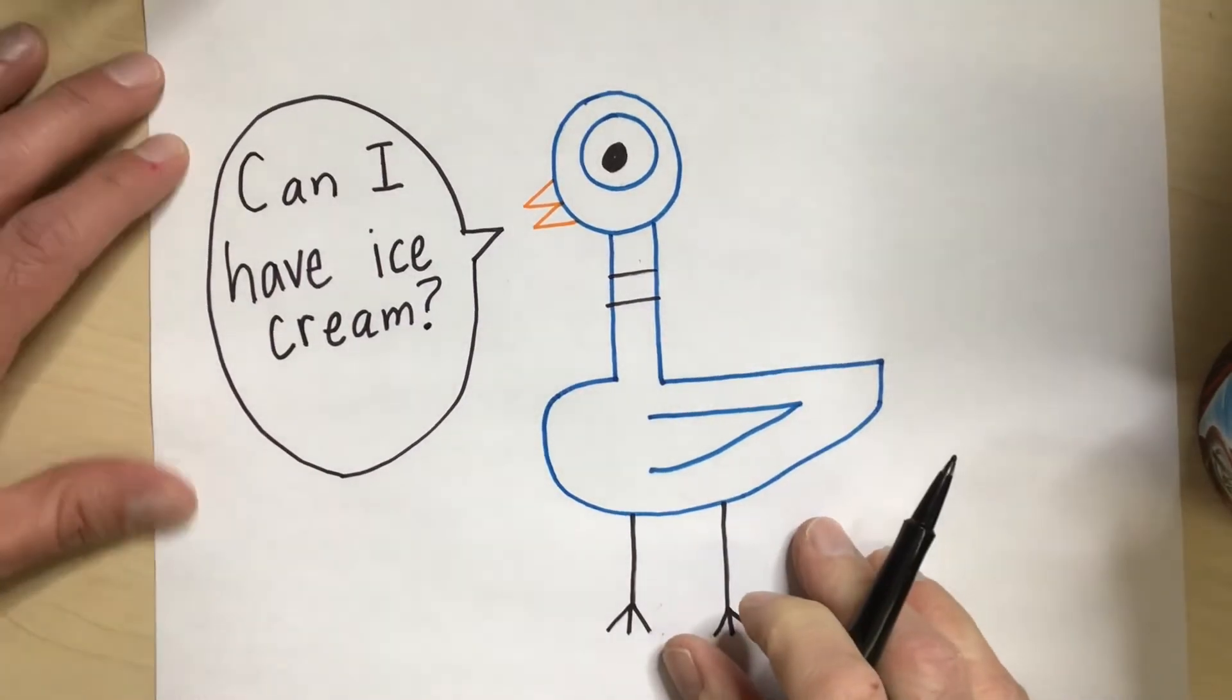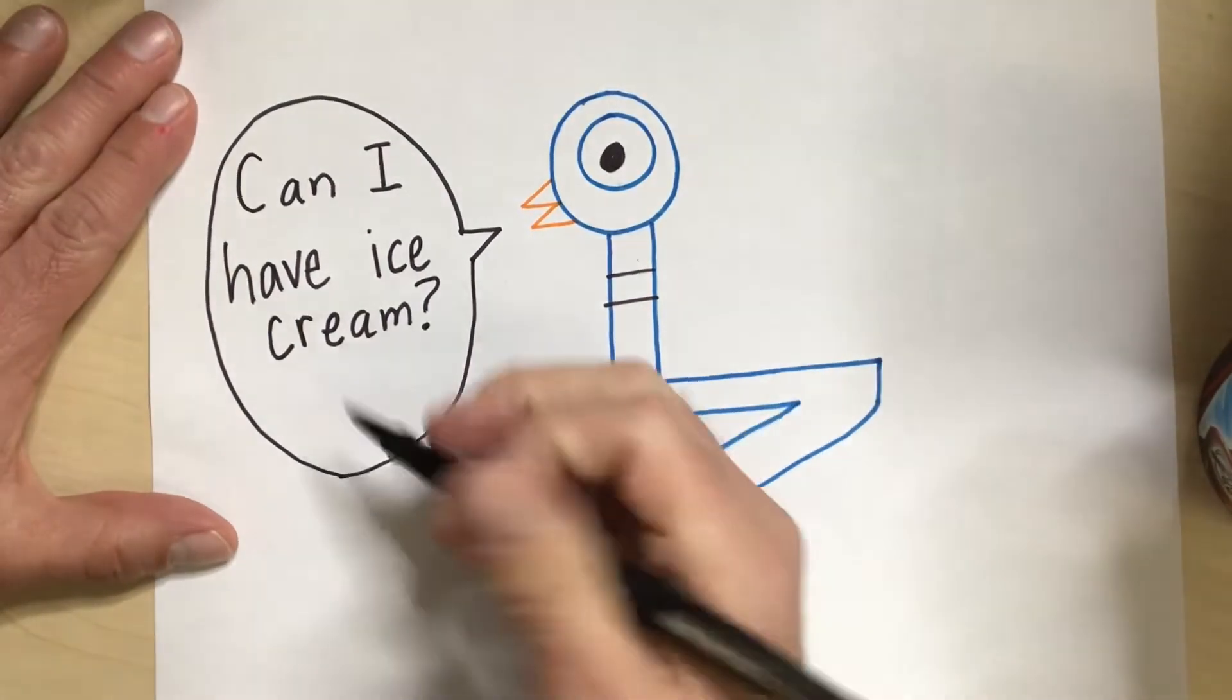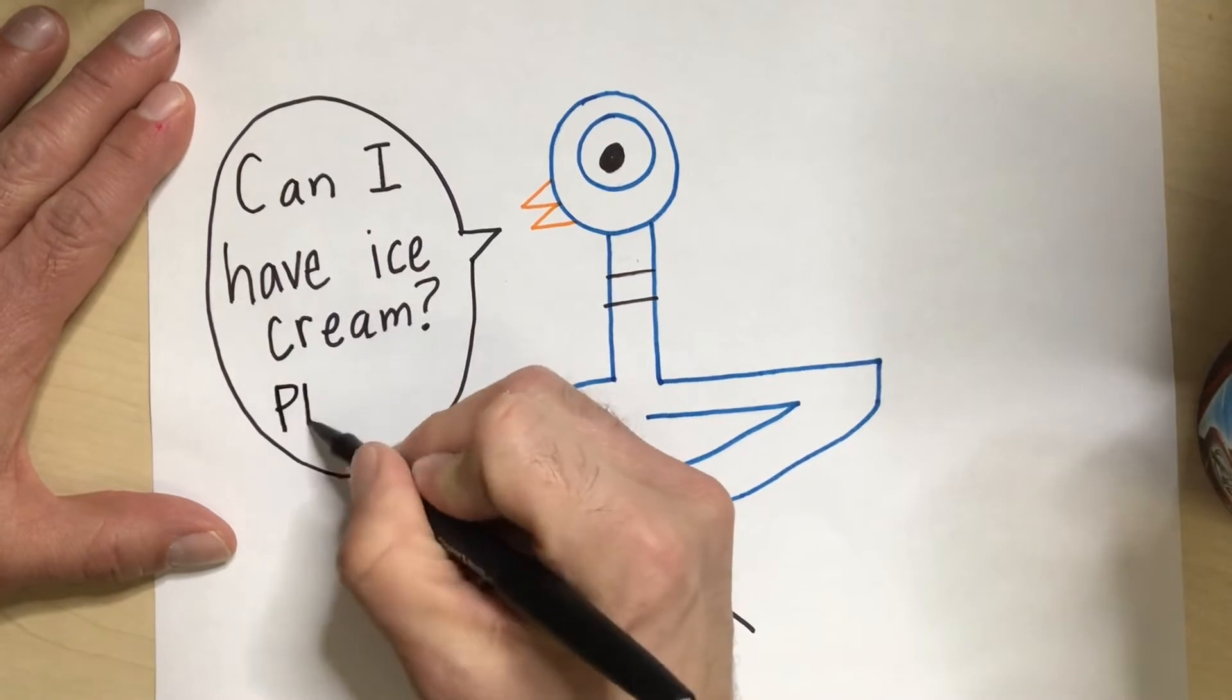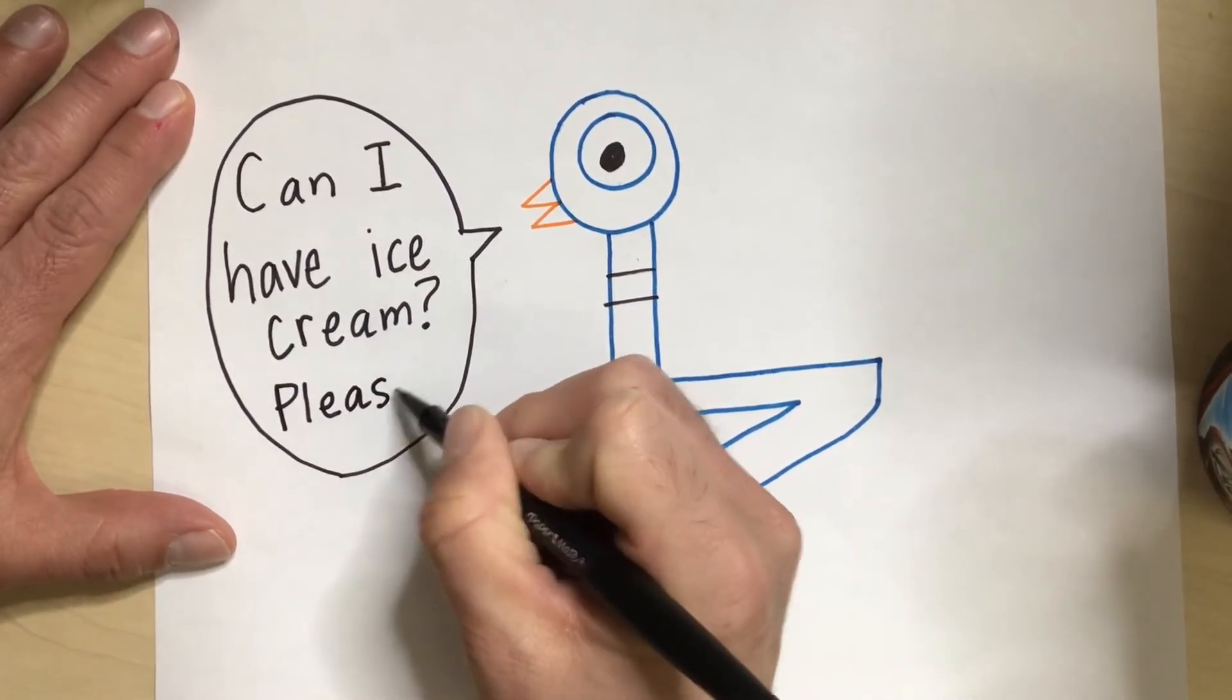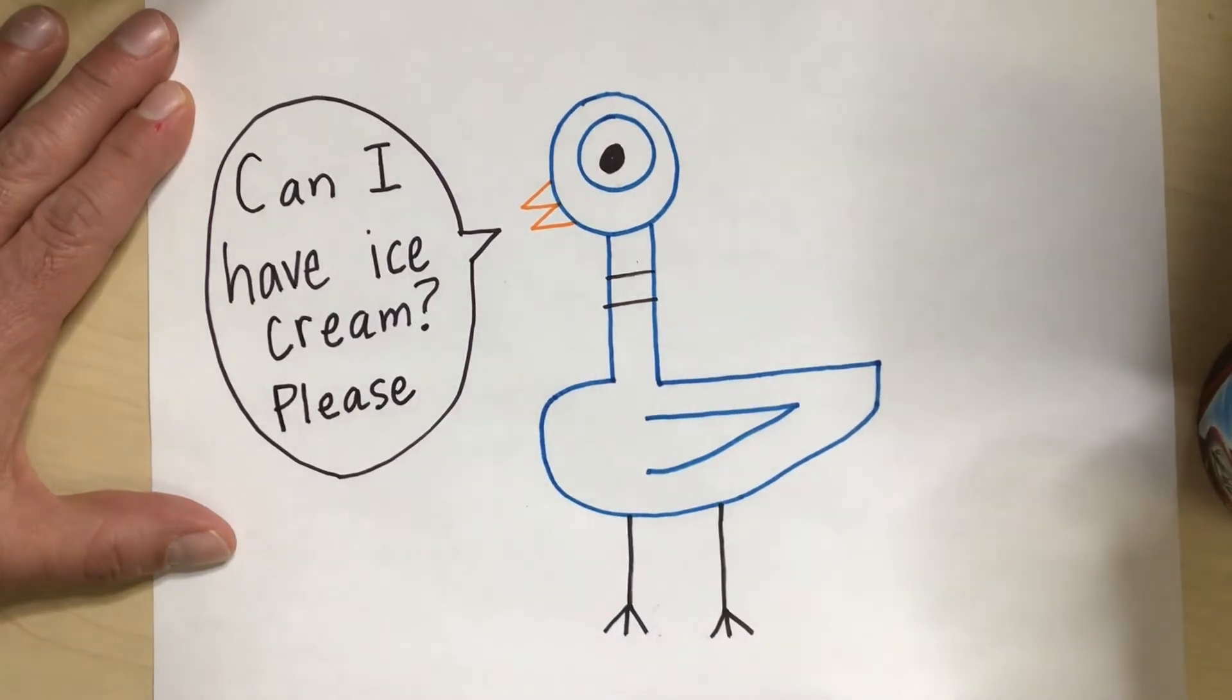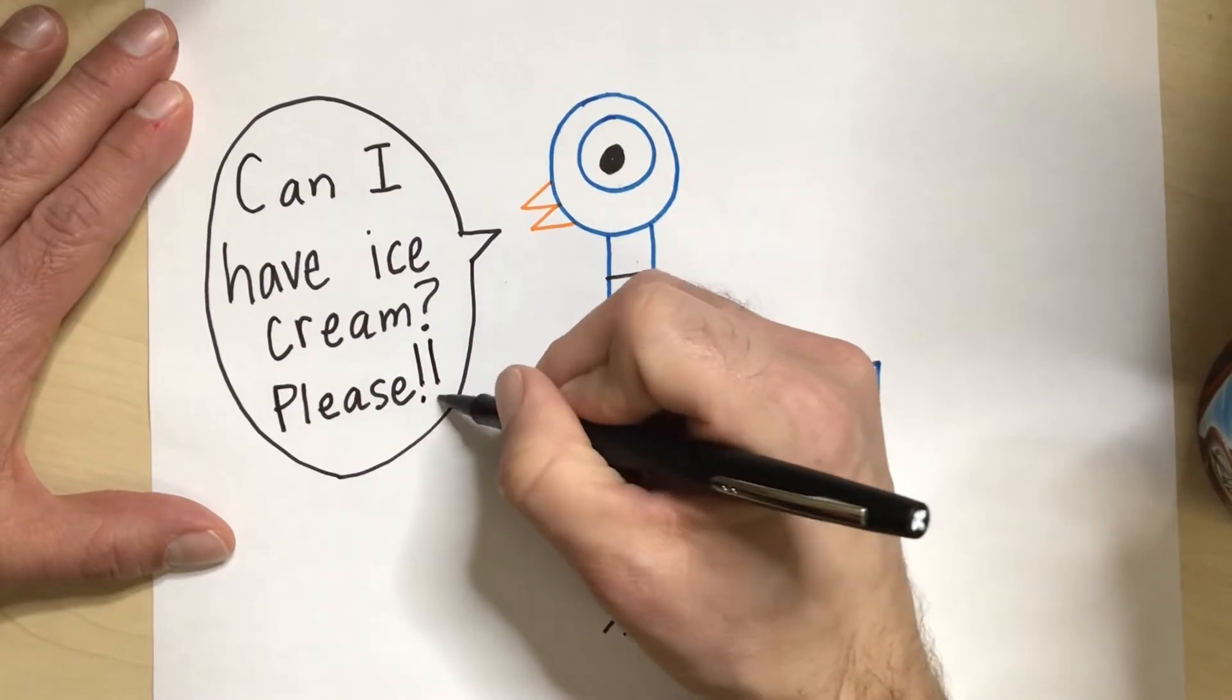And then, the pigeon really likes to say please. So, I'm going to write please down here. It's very polite of the pigeon. Please. And to show that he really wants some ice cream, I'm going to give two exclamation marks.